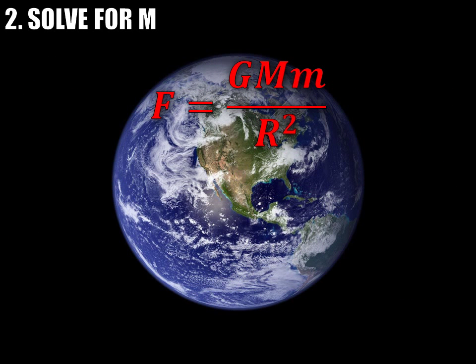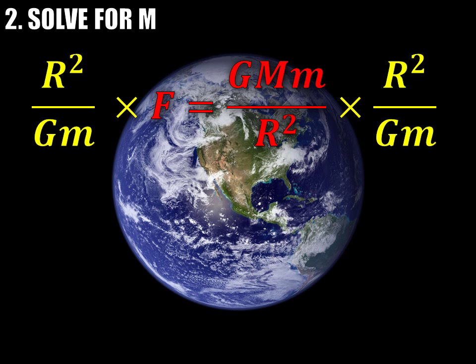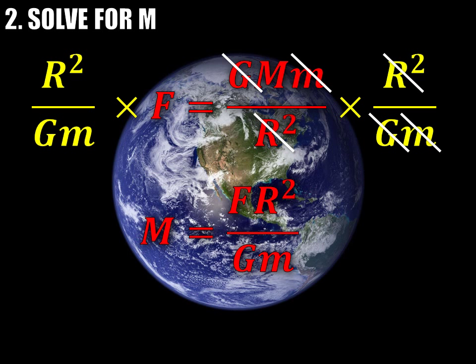The first thing we need to do is solve the universal gravitation equation for the mass. We'll start with F equals GMm over r squared, and we want to get M by itself — isolate M. We do that by multiplying both sides by r squared over Gm. The G's cancel, the m's cancel, and the r squareds cancel, leaving us with simply M on the right side. So M is equal to Fr squared over Gm.